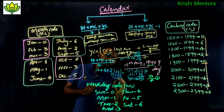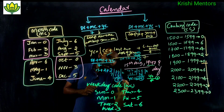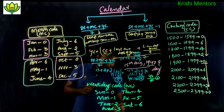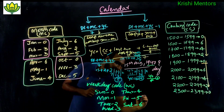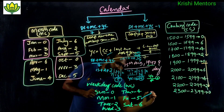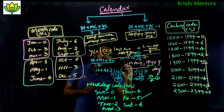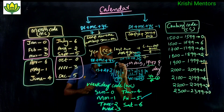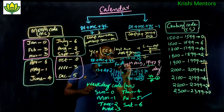The remainder is 5, which means the value is 5. So 15th August 1947 was a Friday.